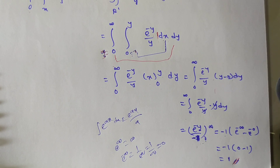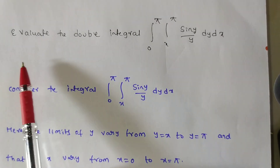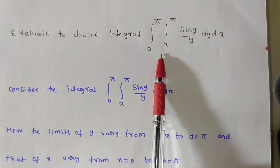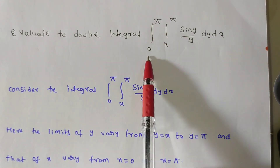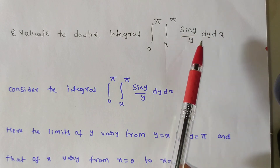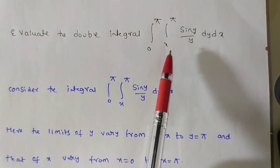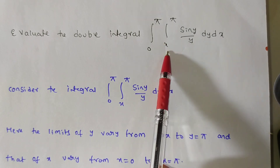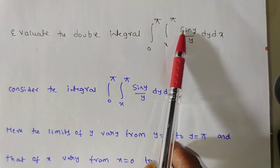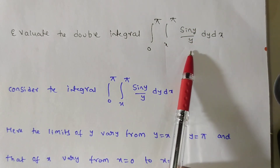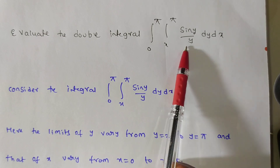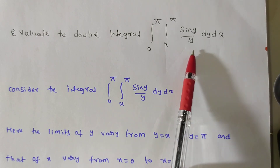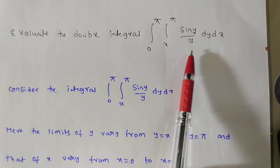In the next video, we will evaluate the double integral from 0 to π, x to π of sin(y)/y dy dx. Here the dependent variable is y, and direct integration with respect to y is not possible, so we will go for a change of order of integration. That solution will be discussed in the next video. Thank you for watching.